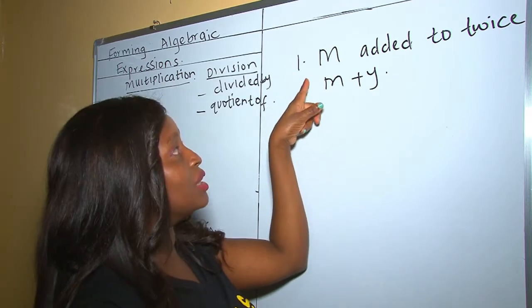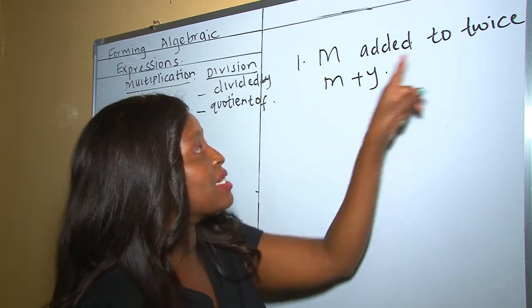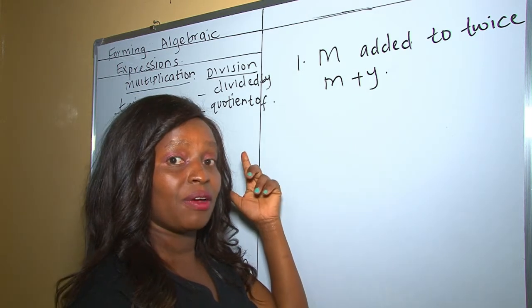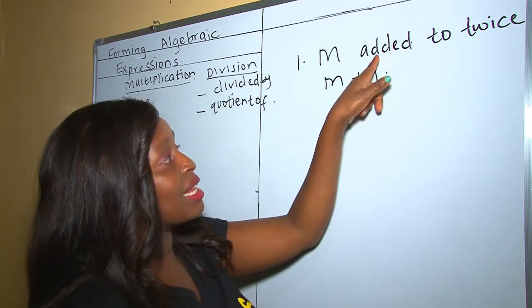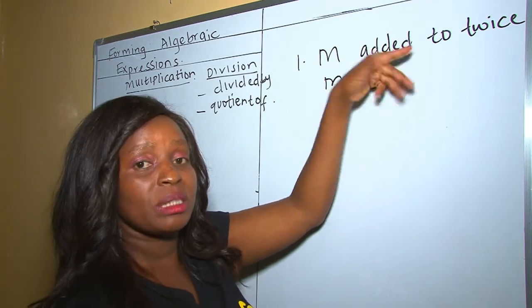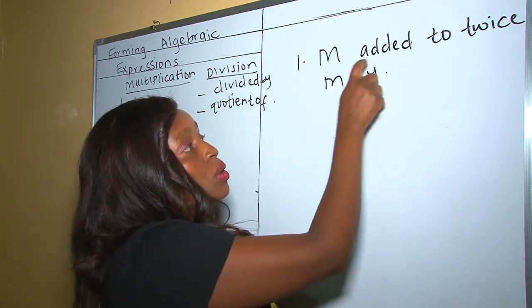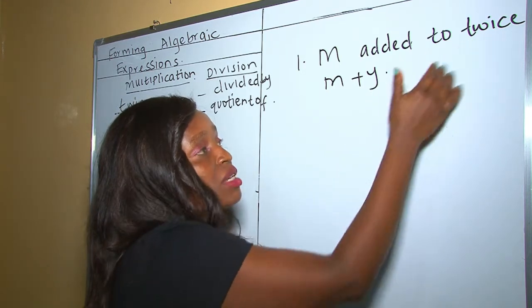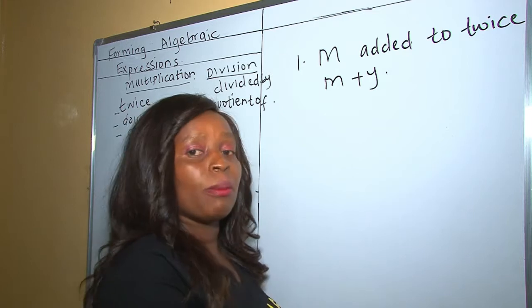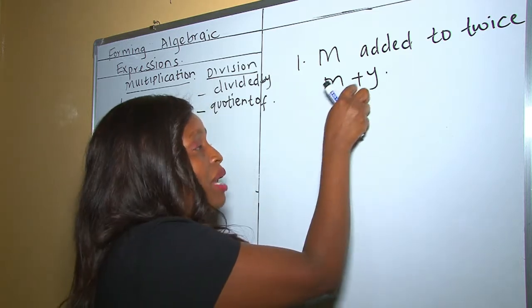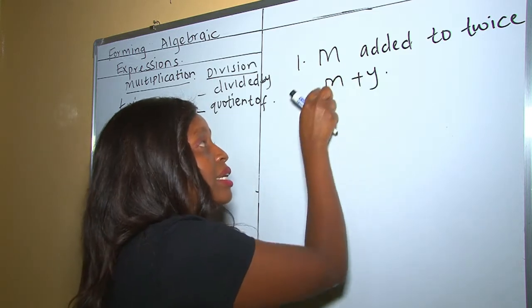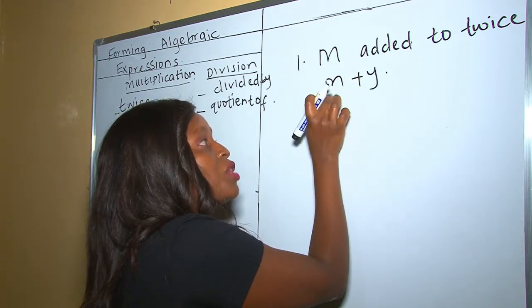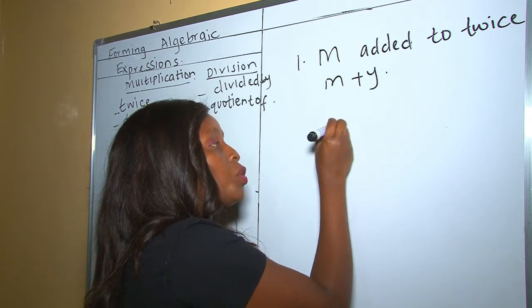In our first example, we have been told that m added to twice m plus y. From the phrases we have just discussed, you can see the phrase added, which means addition. So we are adding m to twice m, to twice of m plus y. So twice means multiplied by two. What are you multiplying by two? You are multiplying m plus y. So the first thing you multiply m plus y before adding m. So twice of this m plus y will be 2 bracket m plus y.